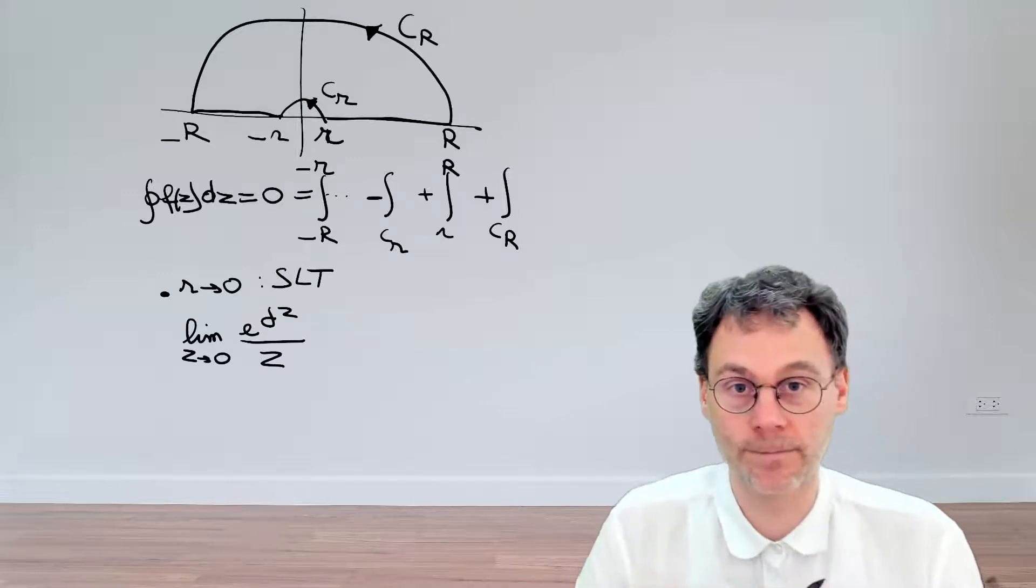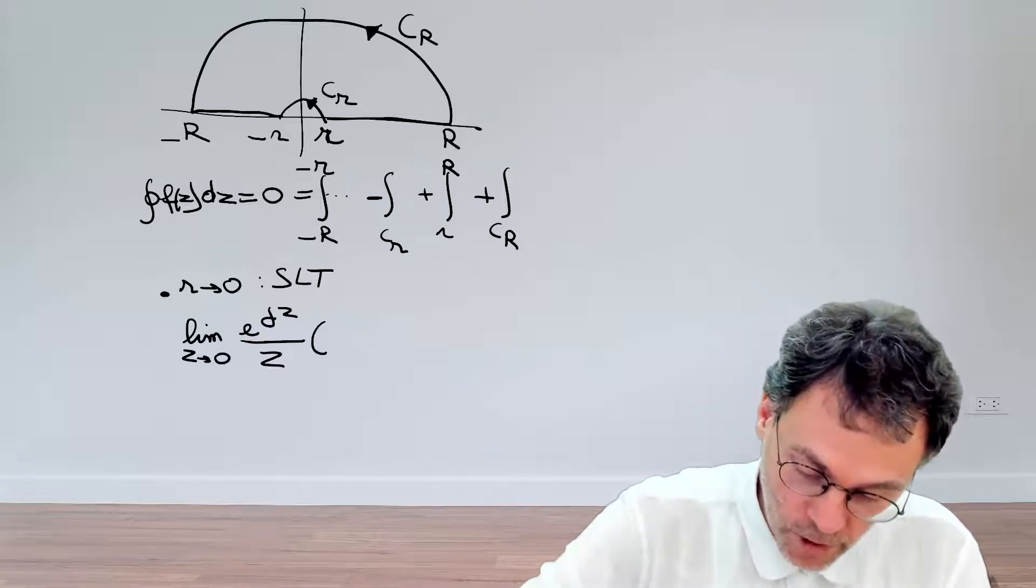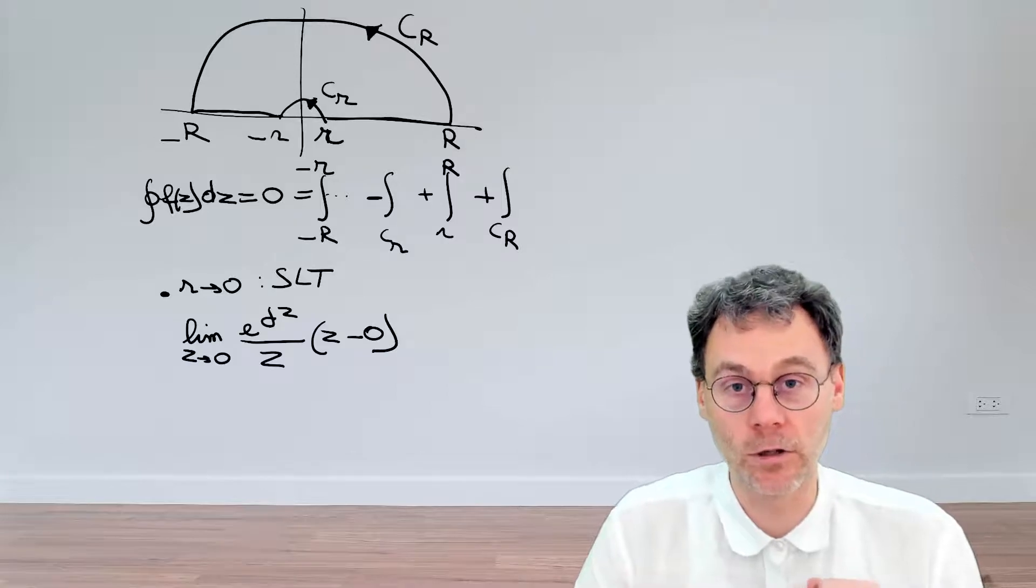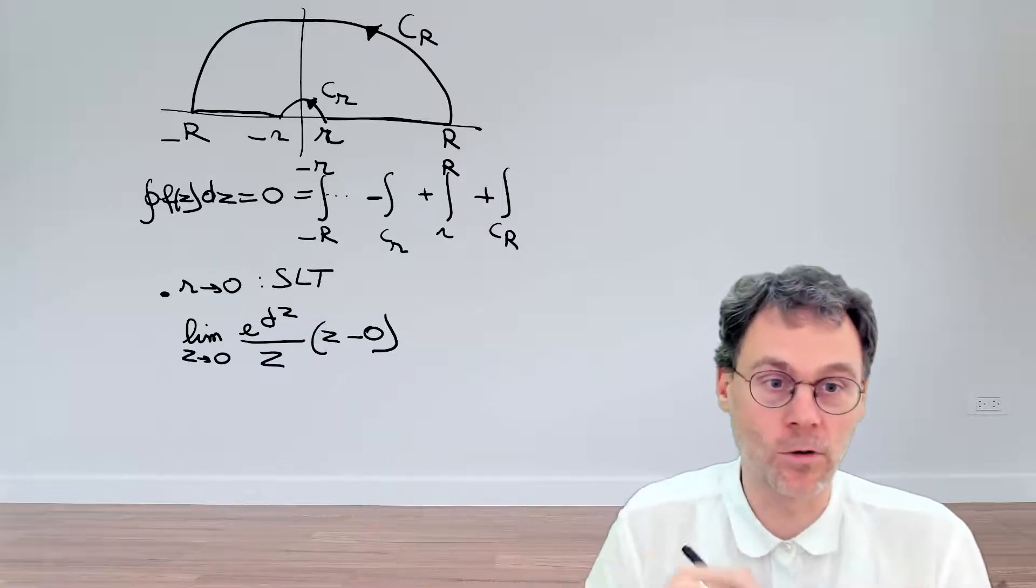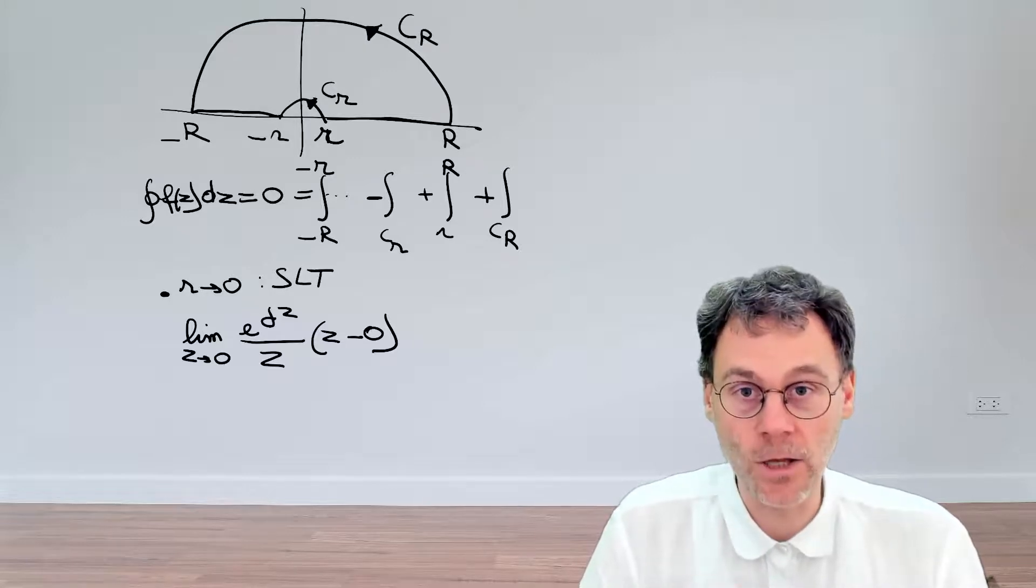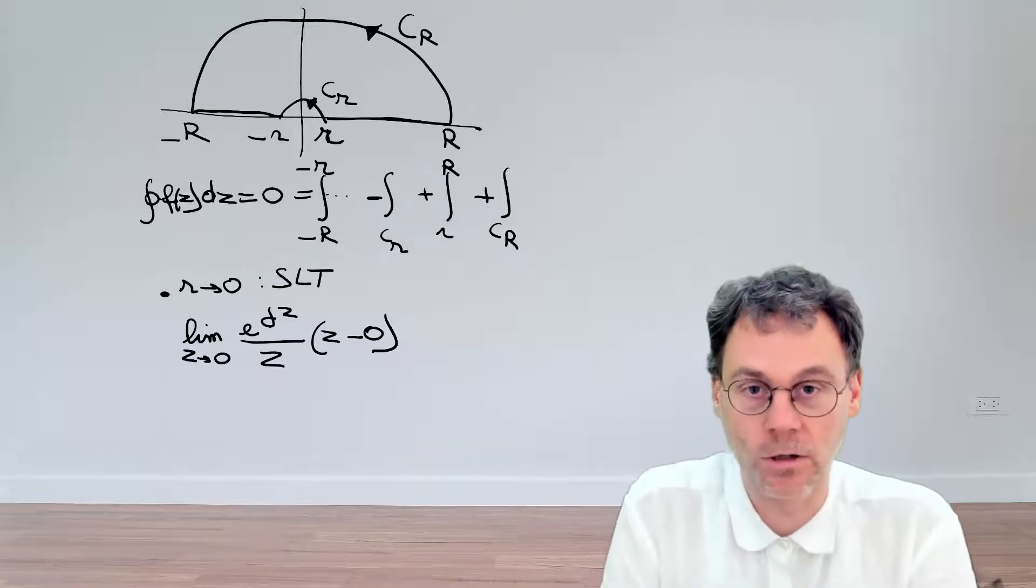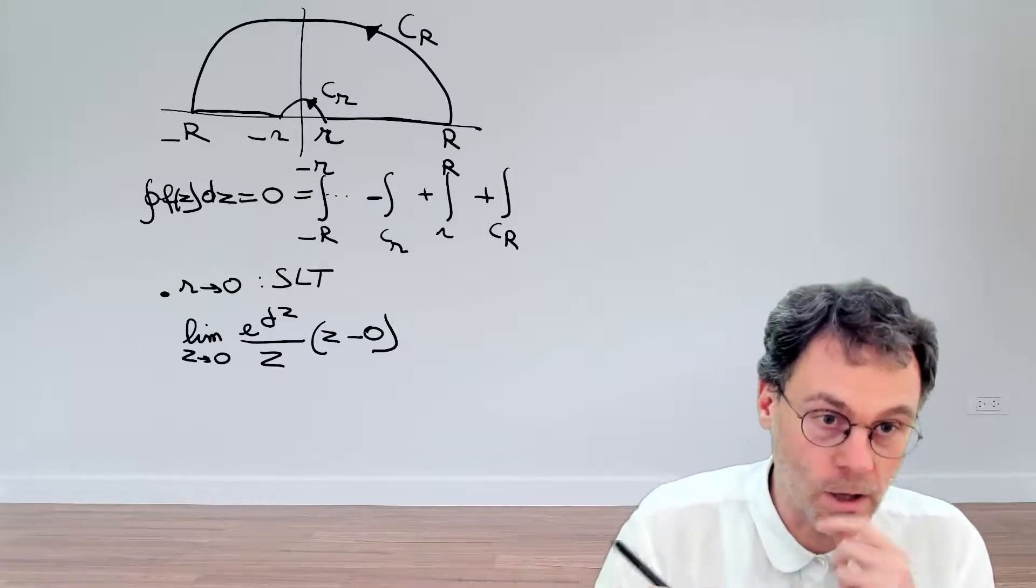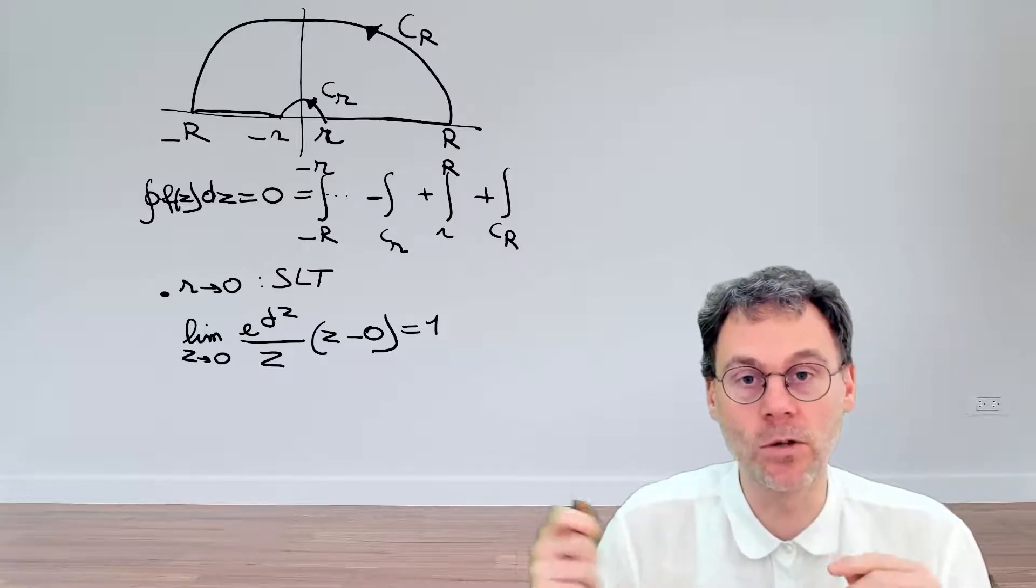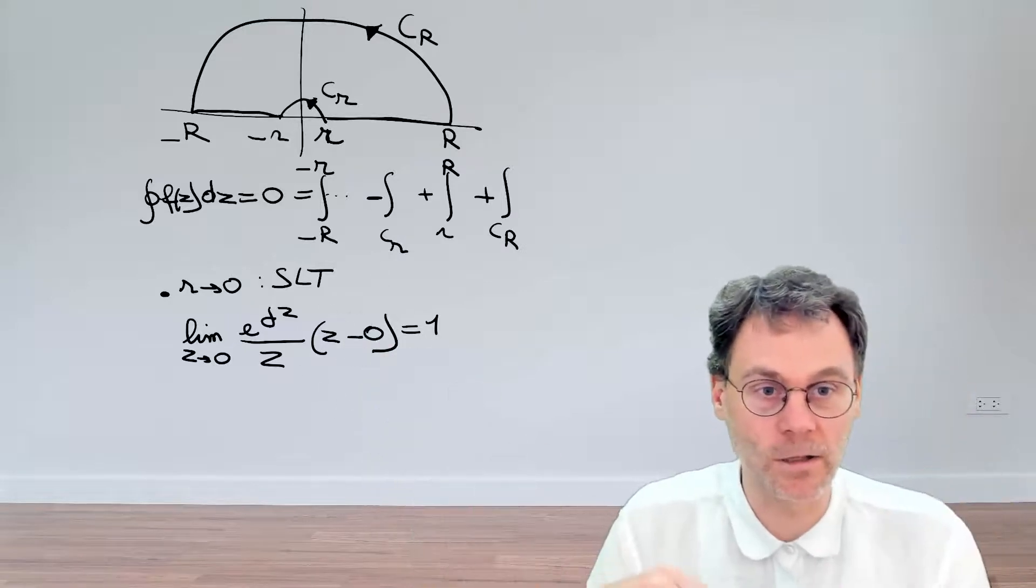we need to calculate the limits of Z going towards the origin of our integrand exponential JZ divided by Z. Right? Because we forget an important term. Do not forget to multiply by Z minus the center of the circle. People often forget this and that will cause lots of trouble. So please don't do that. So in this case, if we evaluate this, the Z drops out. And then we have exponential to the power of 0. So that's just 1.